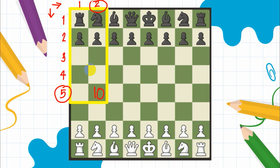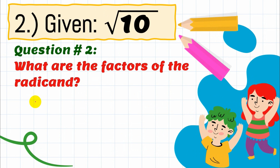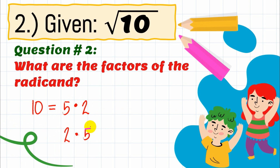This chess board is anchored on your multiplication table. Before, the multiplication table helped you find the answer; now it helps us find the factors. So the factors of the radicand 10 are 5 times 2, or 2 times 5 — they are just the same. Factors are the numbers that when multiplied give us the radicand.